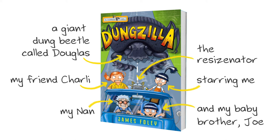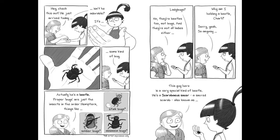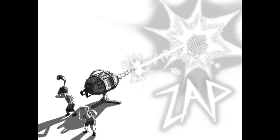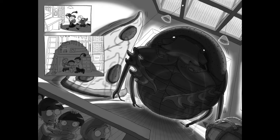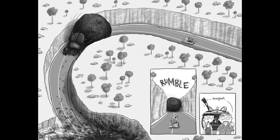Oh, and my baby brother, Joe. Basically, Charlie brings her pet dung beetle around for a play, and we accidentally zap it with a resizernator. The beetle grows to gigantic proportions, and we have to stop it before it rolls a ginormous dung ball into town.